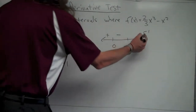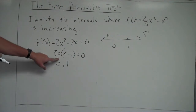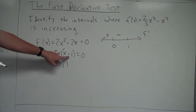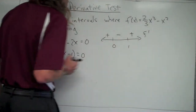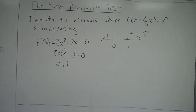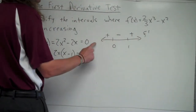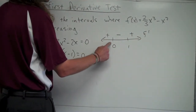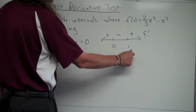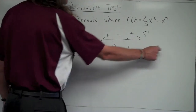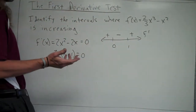Then I'll test a value to the right of one — let's say x equals two. Plugging two into 2x is positive, and plugging two into x minus one is also positive. So overall it's positive when I plug in two. There's my first derivative sign chart: f prime is negative between zero and one, and at zero and one f prime equals zero.